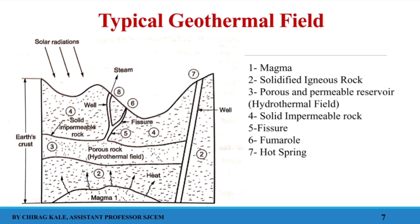This diagram shows you the typical geothermal field. At the bottom there is magma, which heats up igneous rock — igneous rock being what is formed after solidification of magma. Above it, there is porous rock. Whenever solidification takes place in the earth's crust, certain cavities can be created. In those cavities, water can be trapped inside. As the temperature is very high, it can be in the form of steam or water depending on the temperature. That is nothing but your hydrothermal field.